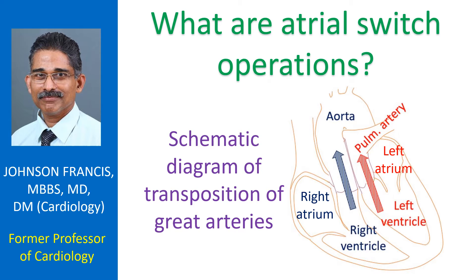Atrial switch operations were the initial operations developed for the treatment of transposition of great arteries. In transposition of great arteries, the aorta arises from the right ventricle and pulmonary artery from the left ventricle. Normally, the aorta originates from the left ventricle and the pulmonary artery arises from the right ventricle.